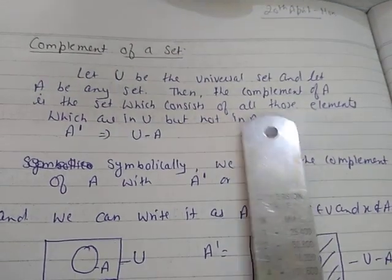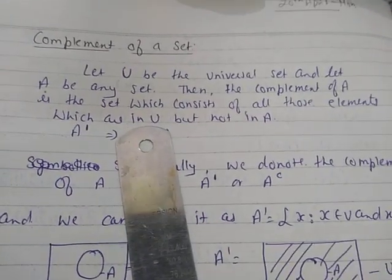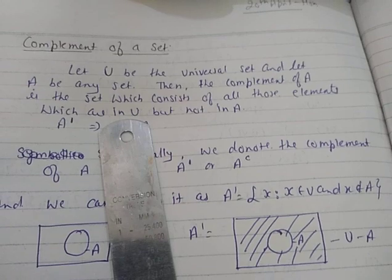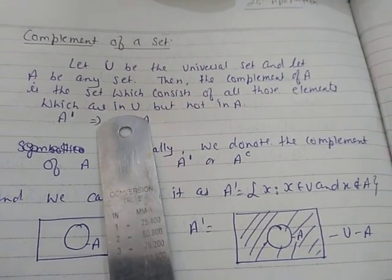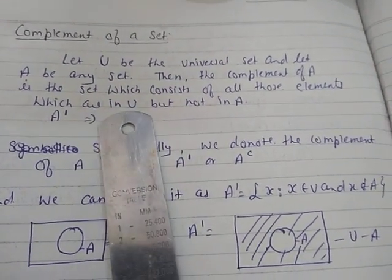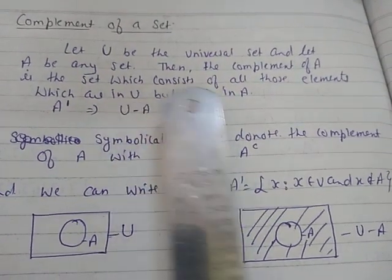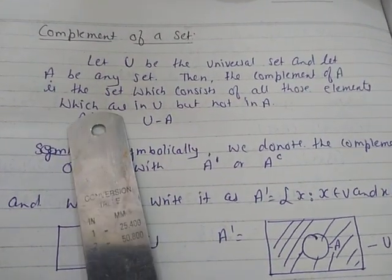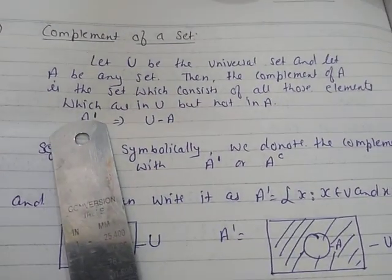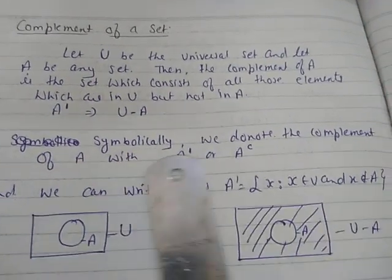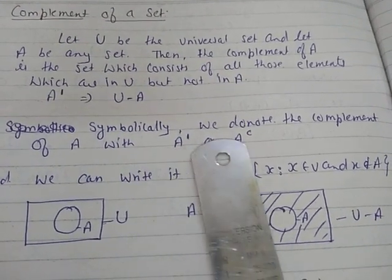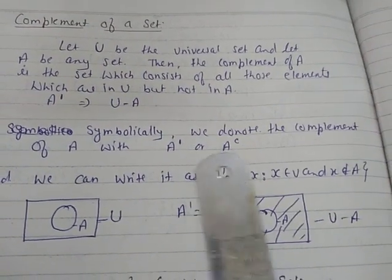Elements which are in U but not in A — this is the concept of difference. Elements which are in U but not in A is your U minus A, and it is represented by A complement. Symbolically we denote the complement of A as A complement, or A with a small superscript c — both are termed as complement.